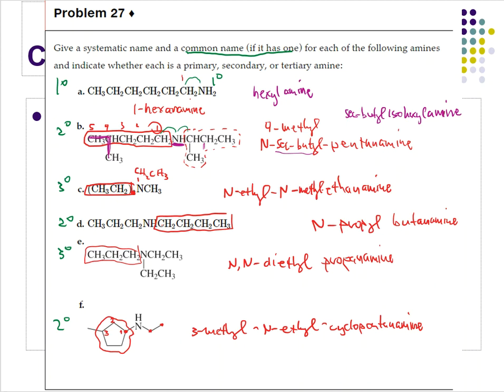For C, this also has a common name. To the left we have an ethyl, up above we have an ethyl, and to the right we have a methyl, so we simply call this diethylmethylamine. That is the common name for that structure.